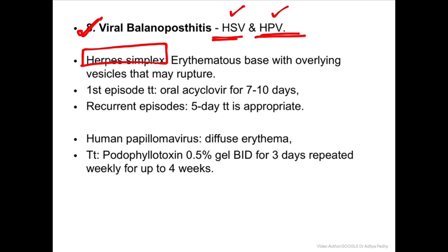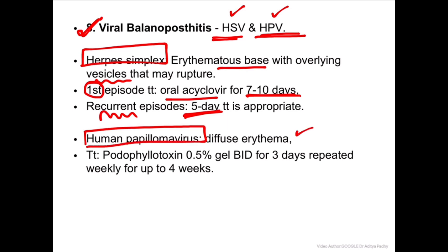Eighth type is viral balanoposthitis, caused by herpes simplex virus (HSV) or human papilloma virus (HPV). HSV presents with erythematous base with underlying vesicles that may rupture - for the first episode give oral acyclovir for seven to ten days; if recurrent, five days of treatment is enough. For HPV, diffuse erythema is present and treatment is podophyllotoxin twice daily for three days, repeated weekly for up to four weeks.